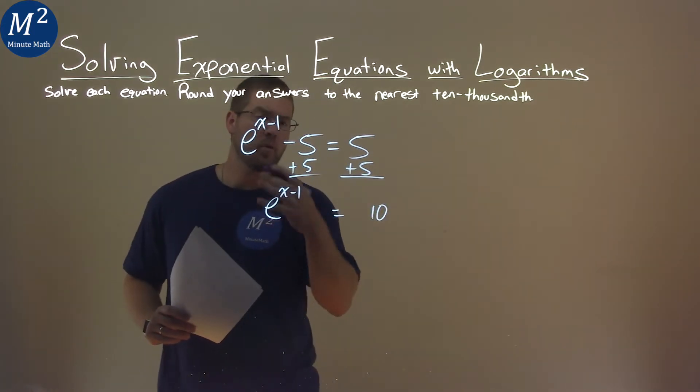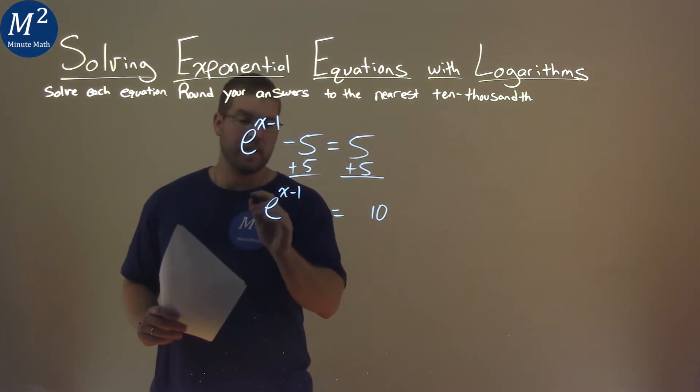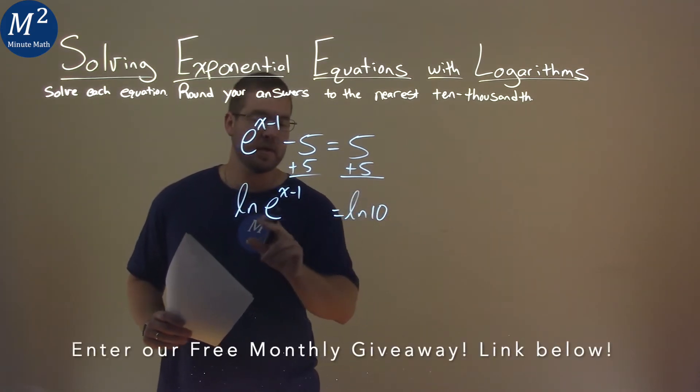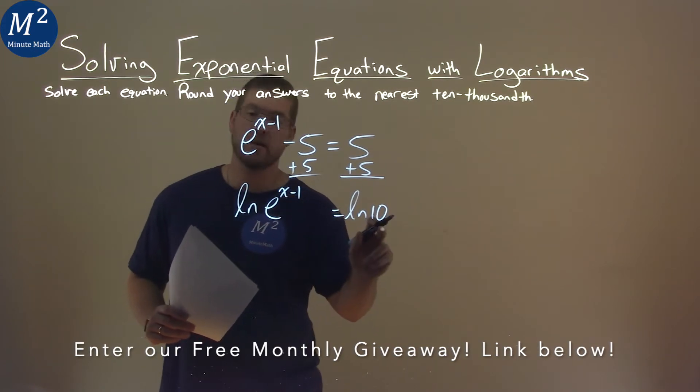But then from here, our rules of logarithms tell us that we can take a natural log of both sides. So I'm going to take the natural log of both sides, natural log of e to the x minus 1 and natural log of 10.